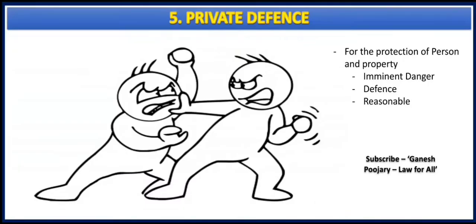The fifth general defense under tort law is private defense. Whenever the plaintiff causes some imminent danger and the defendant uses reasonable force to defend himself or his property, that is considered private defense. The imminent danger — the spontaneous danger occurring at that particular moment — is very important. If the defendant is reacting to something happening at that instant, using reasonable force to protect himself or his property, then if the plaintiff sues, the defendant can use the defense of private defense.